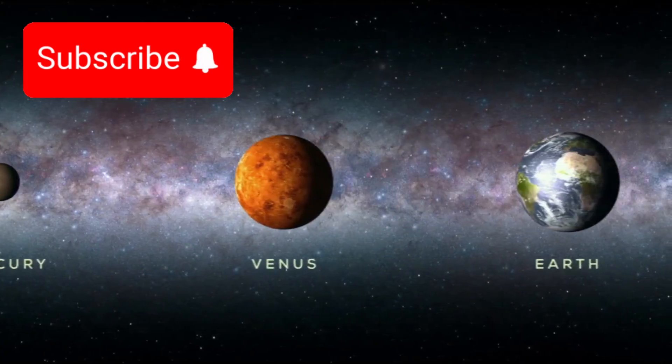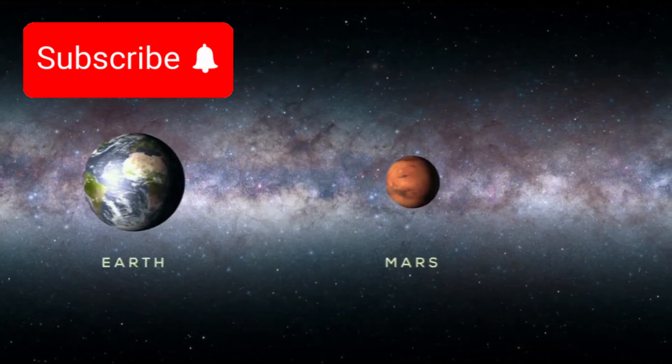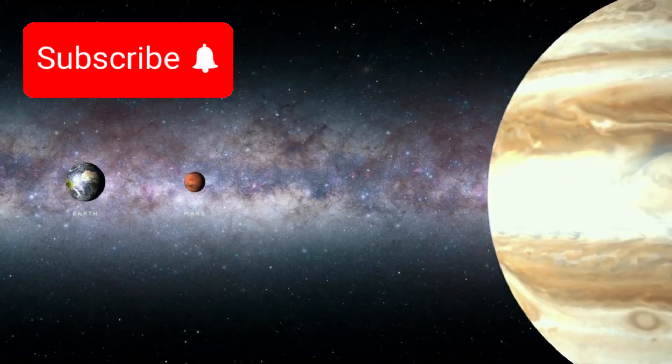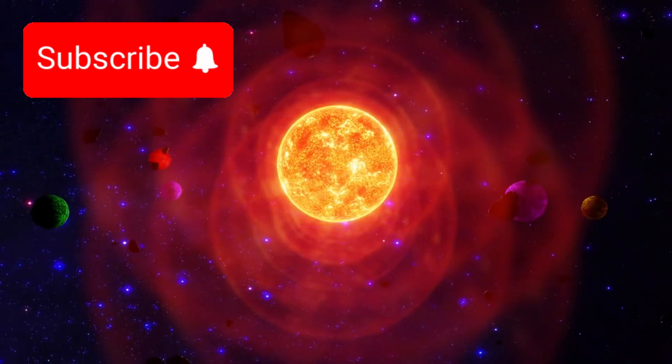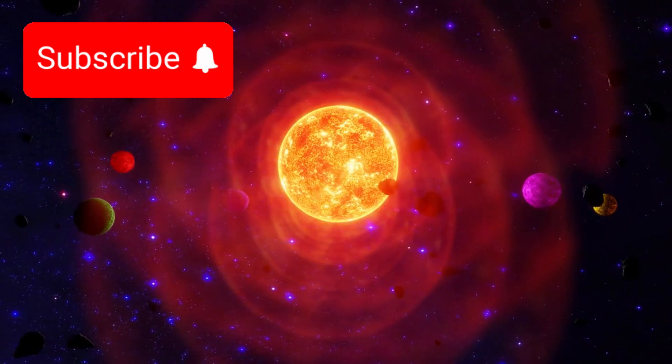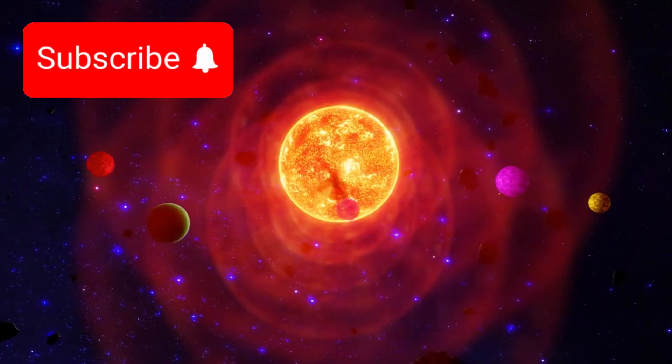To put its scale in perspective, Betelgeuse is roughly 16 to 20 times the mass of our Sun, and it radiates over 100,000 times more light. If placed at the center of our solar system, it would swallow Mercury, Venus, Earth, and Mars.